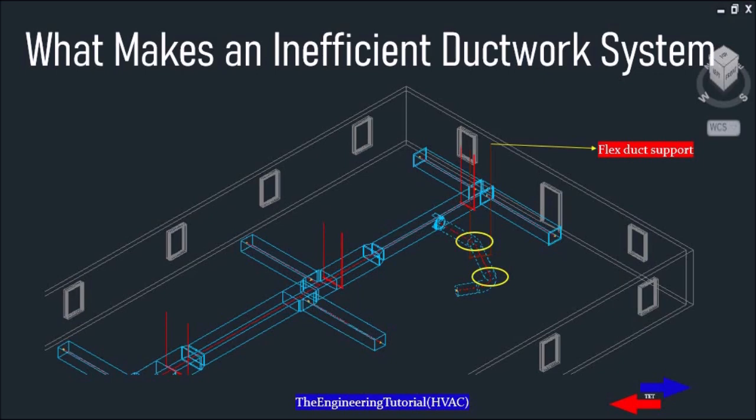The next thing to consider is improper support of a flex duct run, which is most likely the most common mistake. Without proper support, conditioned air does not properly flow in a flex duct installation. Flex ducts offer a much faster installation than hard duct, but during installation, correct practices are required.